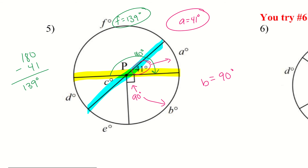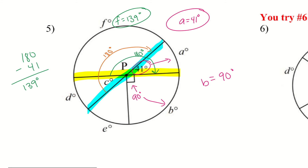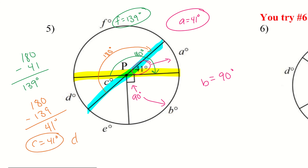Let's take a look at c and d — we know they're going to be equal. I'll use the blue line now: I have another 180 degrees there. Since I know what f is, I take 180 minus 139, which gives me 41 degrees. So c equals 41 degrees, and d equals c — they are vertical angles, and vertical angles are congruent.